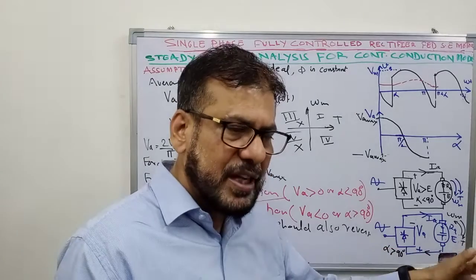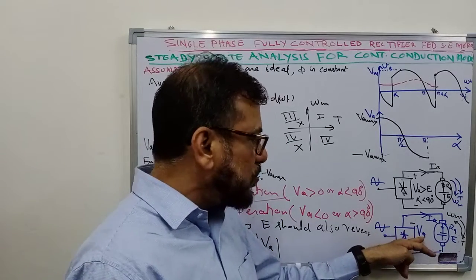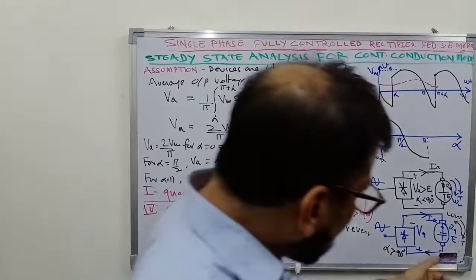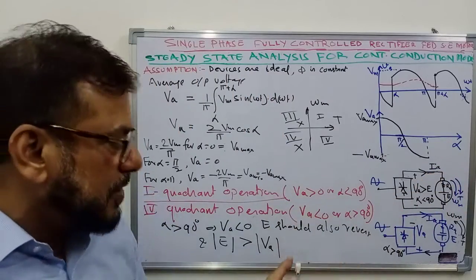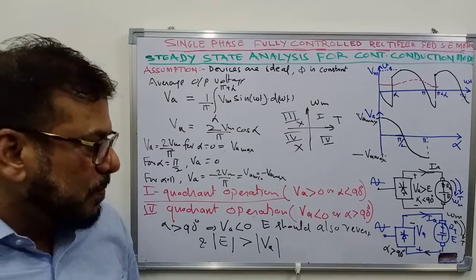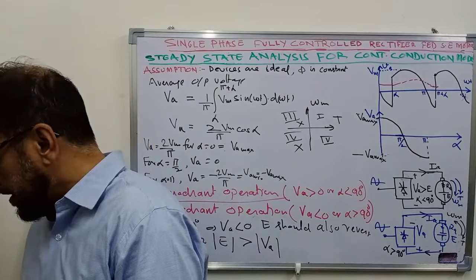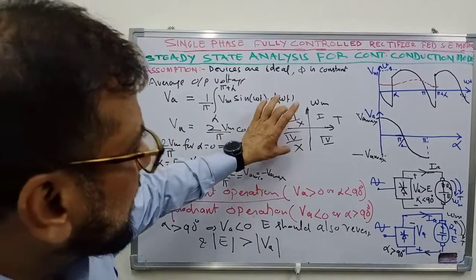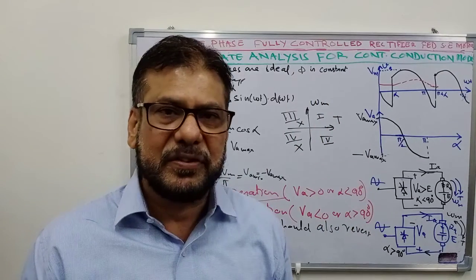You gradually increase alpha beyond 90 degrees and maintain a value of alpha that causes Va to be slightly less than E, so that current continues to flow and braking operation is sustained. Energy is fed back to the source. So these are the two possible modes of operation — first quadrant (forward motoring) and second quadrant (regenerative braking) — in the rectifier controlled DC drive. Third and fourth quadrant operations are not possible in this configuration.